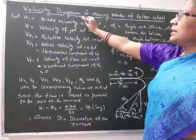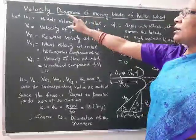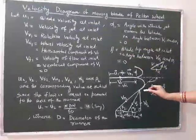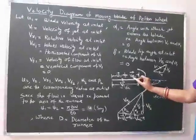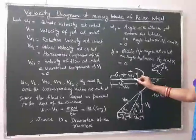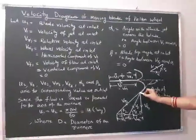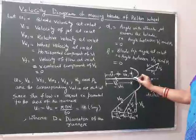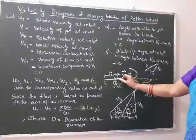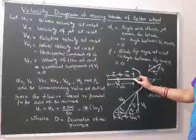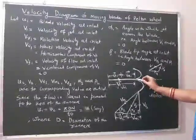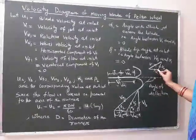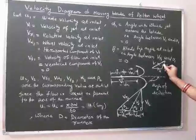To understand the velocity diagram, first we have to know what a velocity diagram is. A velocity diagram is nothing but the finding out of relative velocity at inlet and outlet of the blade. Velocity is a vector quantity, so the addition or subtraction of two vectors is not mere arithmetic addition. This is the example of velocity addition or velocity subtraction by vector method.